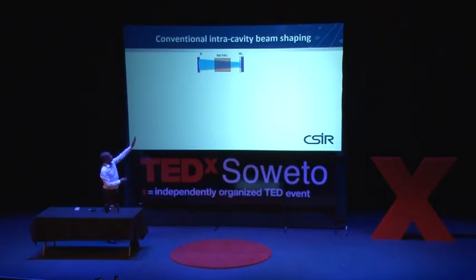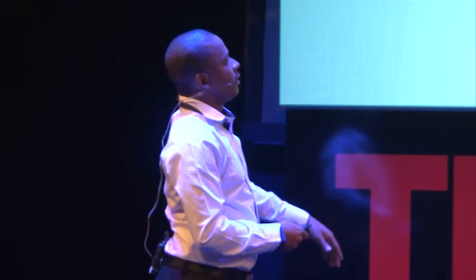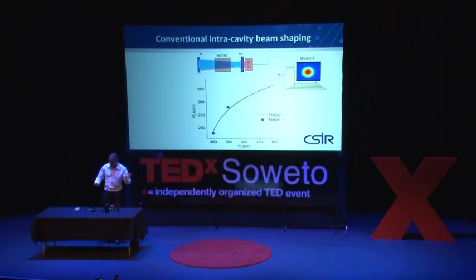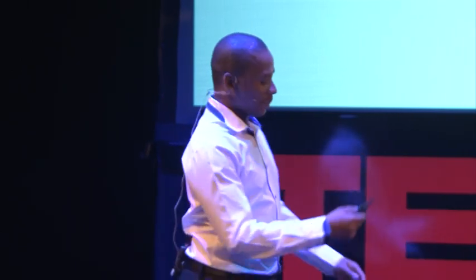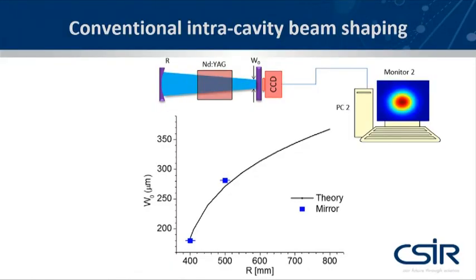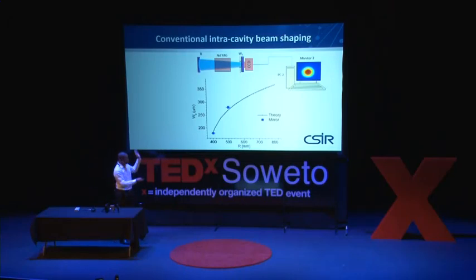In simple terms, before you actually remove this mirror, you just do a simple experiment. Put a camera on what comes out of your laser, and do a simple graph to explain what this is. This is R — that's represented there. If R is 400, it means that it's very, very curved, very sharp. If R goes to 800, it's much more flat. So if it is very curved, it means that you are focusing, and the beam waist W-naught on that side is very small. It means that if you change the curvature — if the curvature is very small, the beam is very small; if it's very large, it's flatter. If you do the maths, you'll see that the line goes like that.